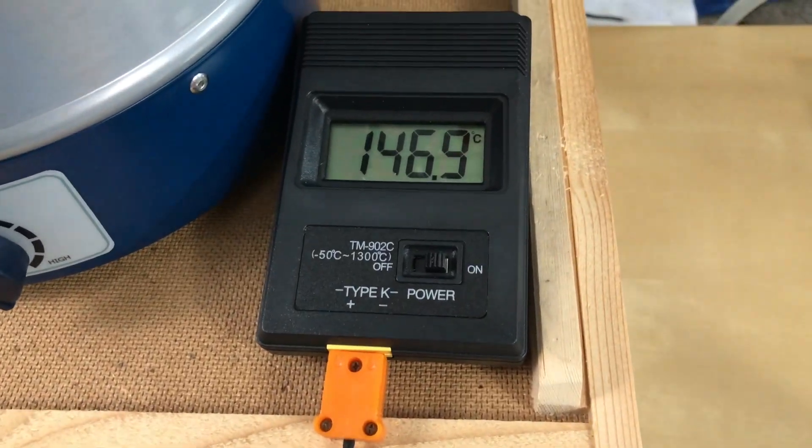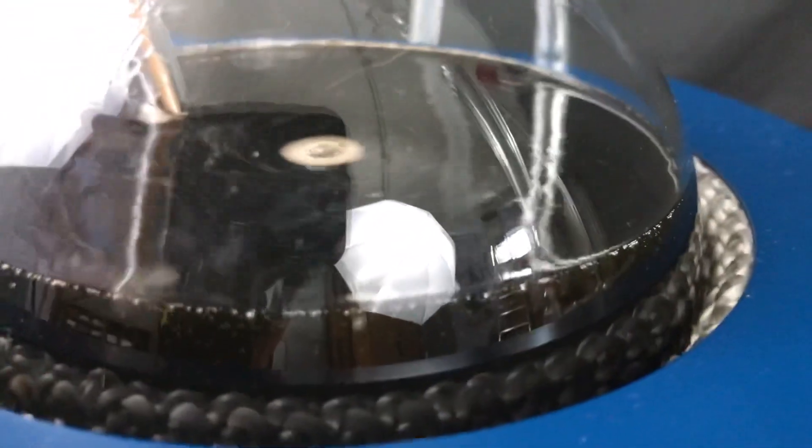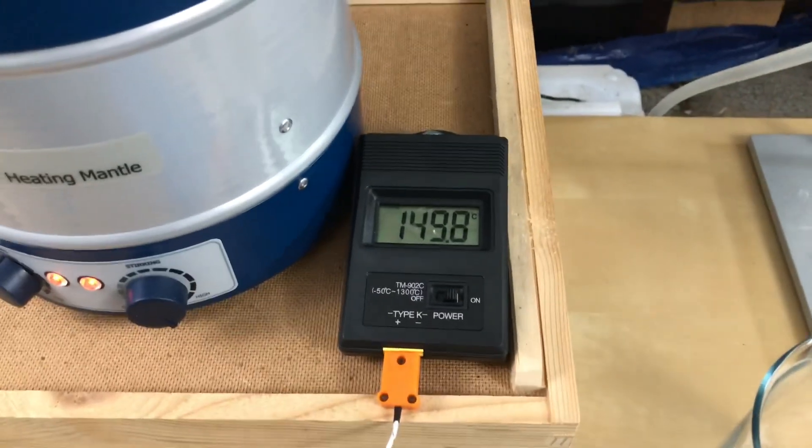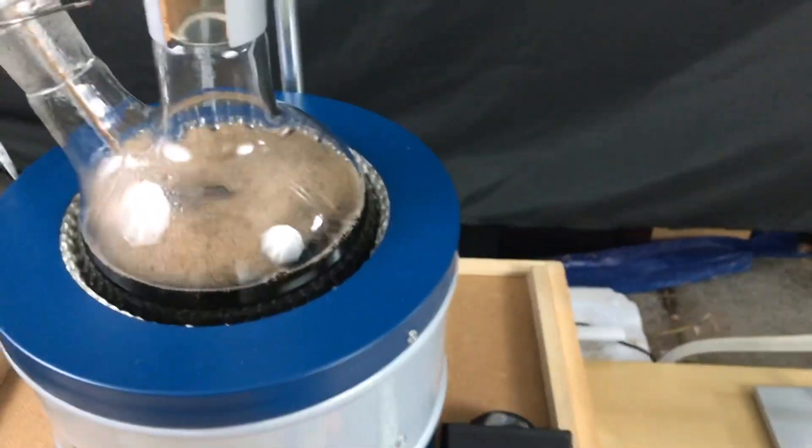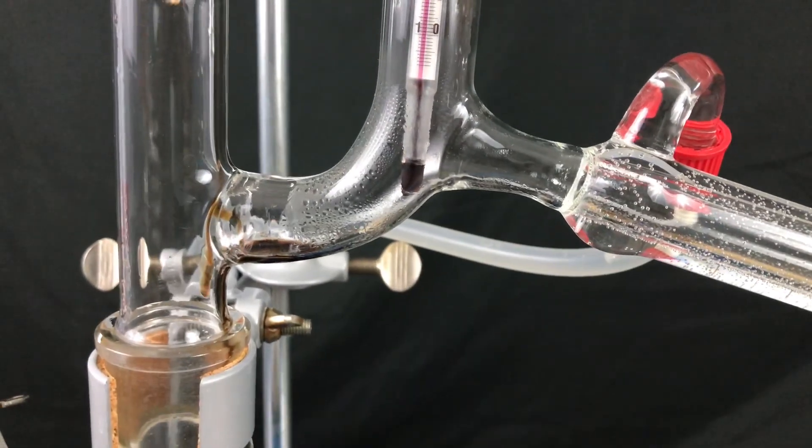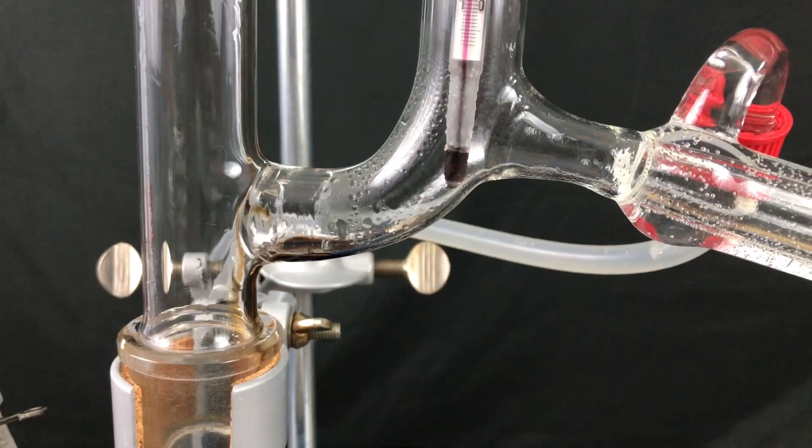At around 150 degrees celsius bubbles started to form and you can also see that our solution turned black. As the foaming increased even more I turned off the heating mantle. I didn't want all of this tar and black stuff to pass over into my condenser but we were able to see a nice and clean vapor front climbing up.